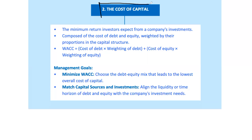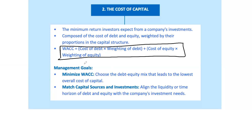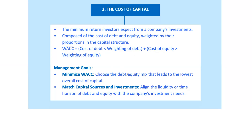Now let's talk about cost of capital. This is the minimum return a company must earn on its investments to satisfy its investors. If you don't meet this threshold, you're essentially destroying value. WACC is the average cost of debt and equity weighted by their proportions in the company's capital structure. It's the company's hurdle rate — the minimum return needed on any investment to make it worthwhile. Consider Apple: when they decide to launch a new product, they use their WACC to evaluate whether expected returns will exceed the cost of capital. If the return is higher, they go ahead; if not, they might shelve the project.